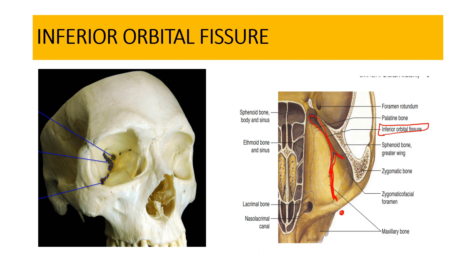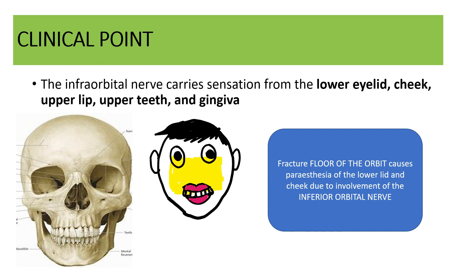An important clinical point: the infraorbital nerve carries sensation from the lower eyelid, cheek, upper lip, upper teeth, and gingival region. Whenever there is a fracture of the floor of the orbit involving this area, the patient will have loss of sensation or paresthesias of the lower lid and cheek due to involvement of the infraorbital nerve.